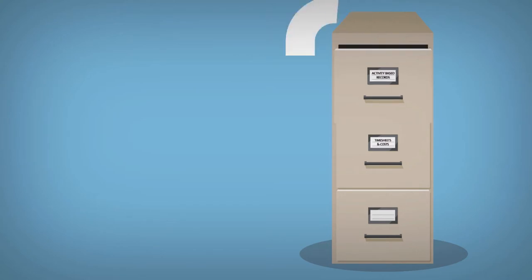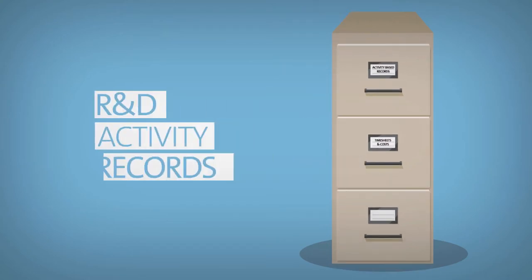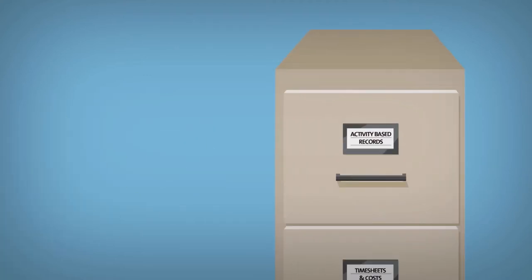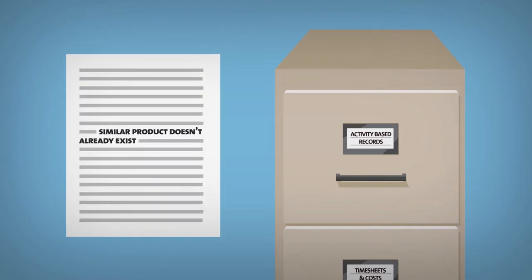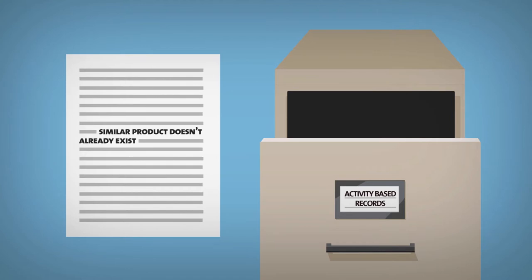Record keeping is an important part of any R&D project and good business practice. Relevant records can include those normally maintained to support income tax claims and those that cover the planning and progress of R&D activities. Activity based records EnviroLoo kept included literature research and records of consultation to show that a similar product didn't already exist.